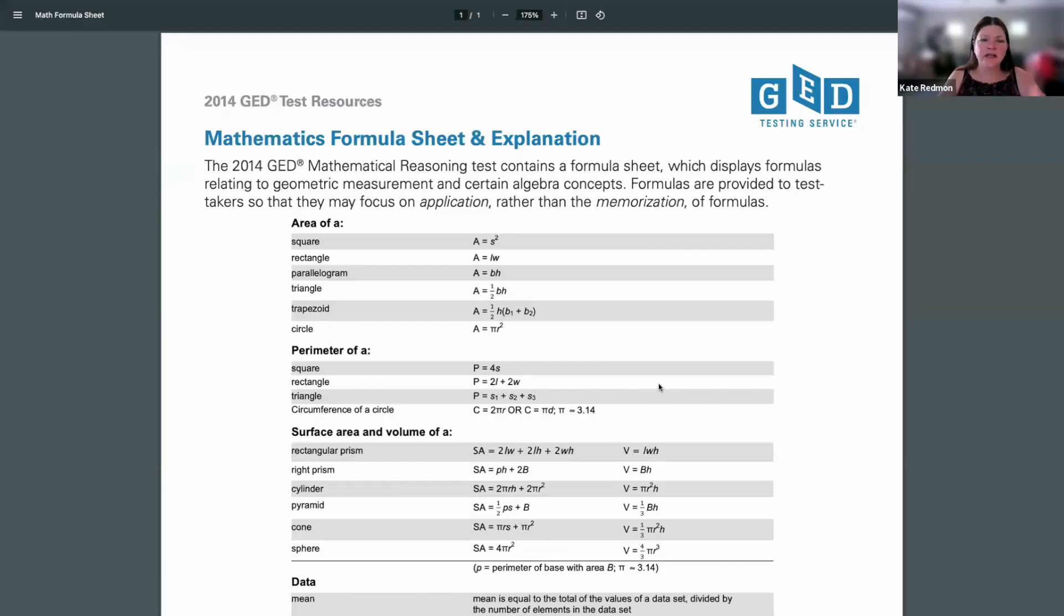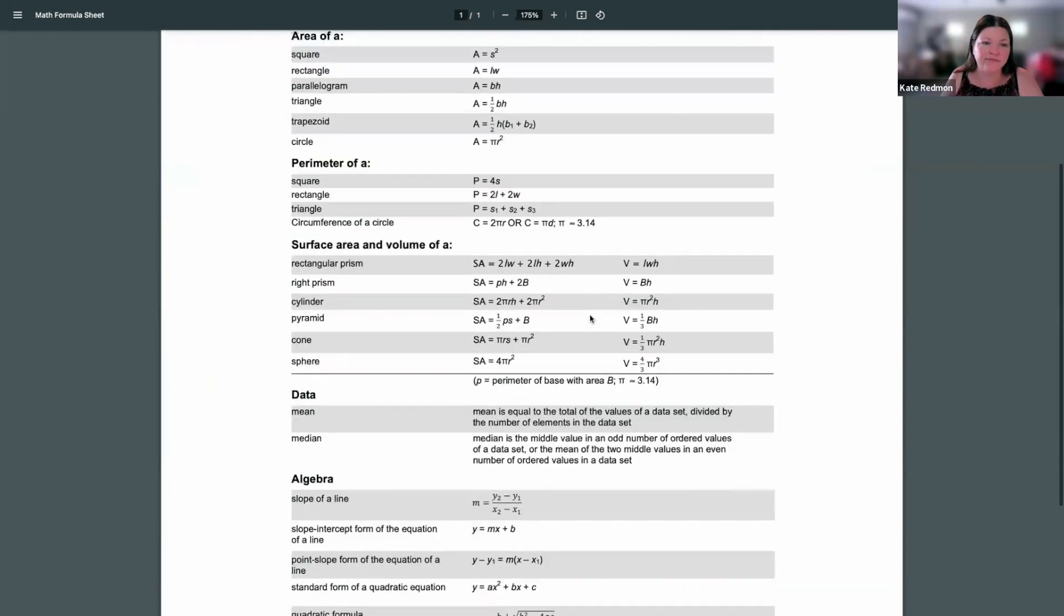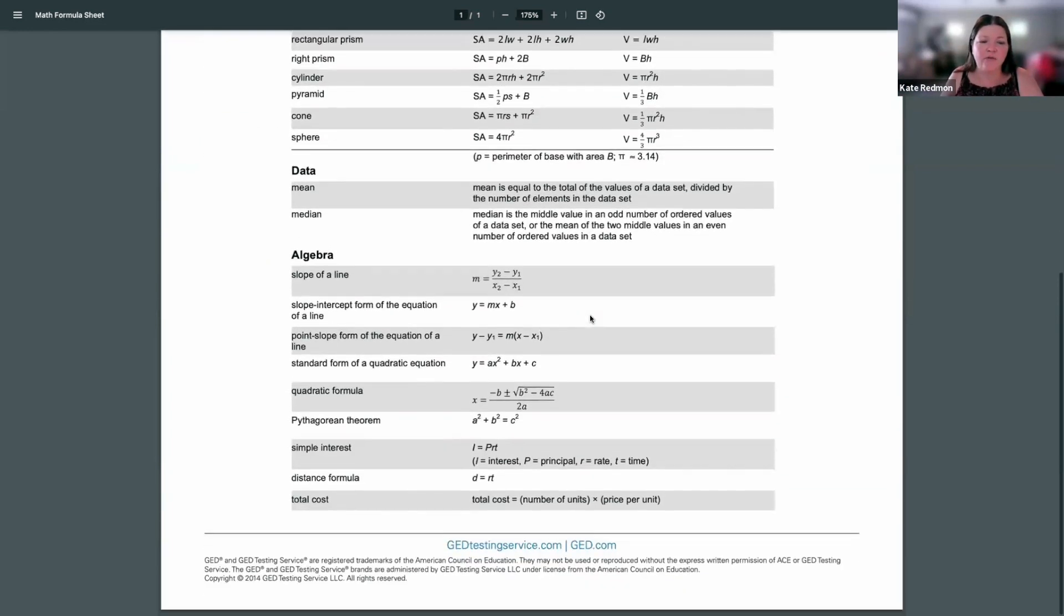So here is that formula sheet and the first half or so of the formula sheet is all geometry formulas. So we're looking at different ways to measure shapes. But then after that, we have some other formulas that you shouldn't neglect. So down at almost the very bottom under the algebra concept, we do have that simple interest formula, which says I is equal to PRT.